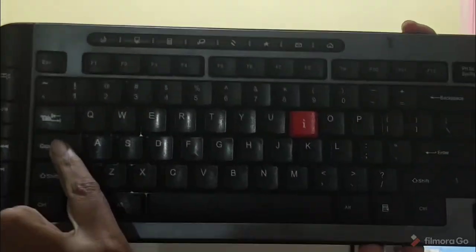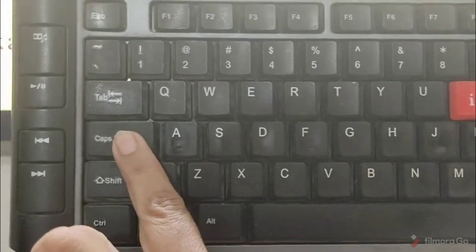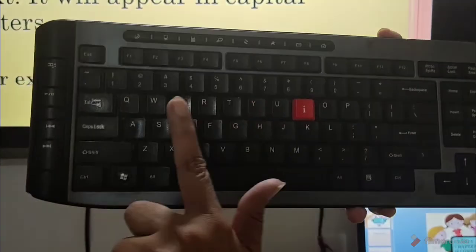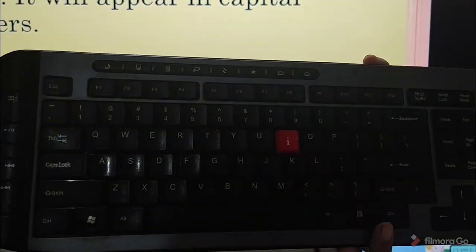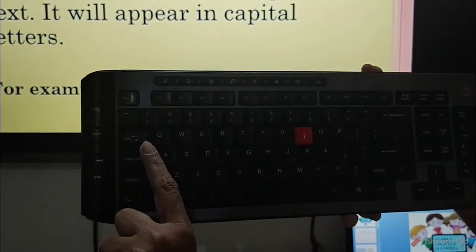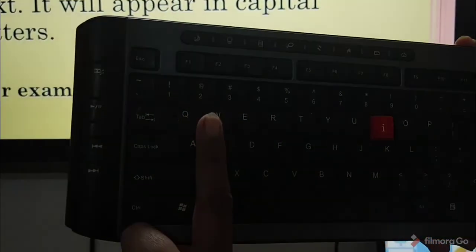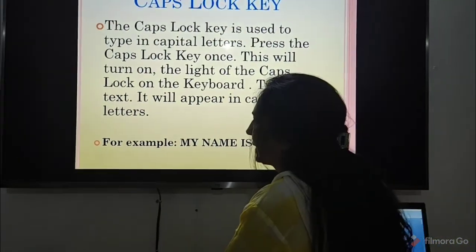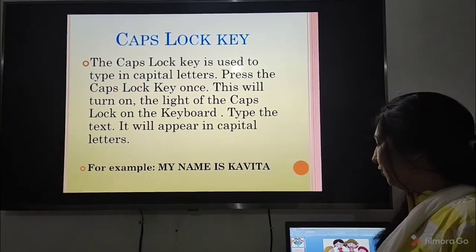This is the caps lock key. When I press it once, there is a light on the keyboard. Now when I type, everything comes in capital letters. When I press it again, the caps lock is switched off and the letters come in small alphabets.